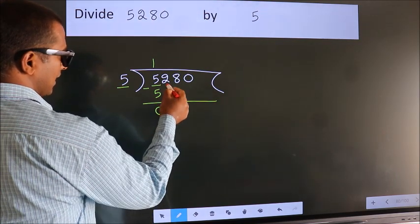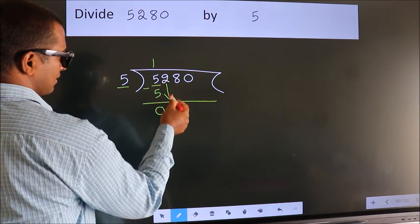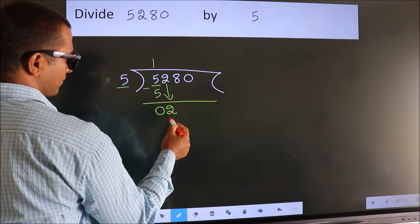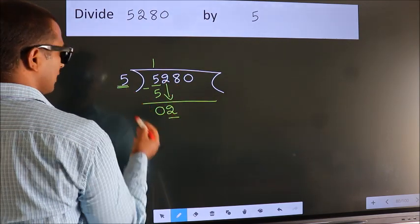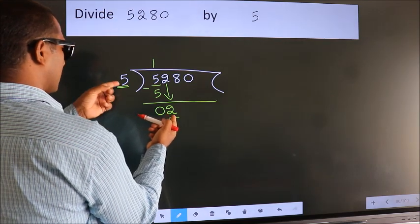After this, bring down the beside number. So 2 down. Here we have 2. Here 5. 2 is smaller than 5.